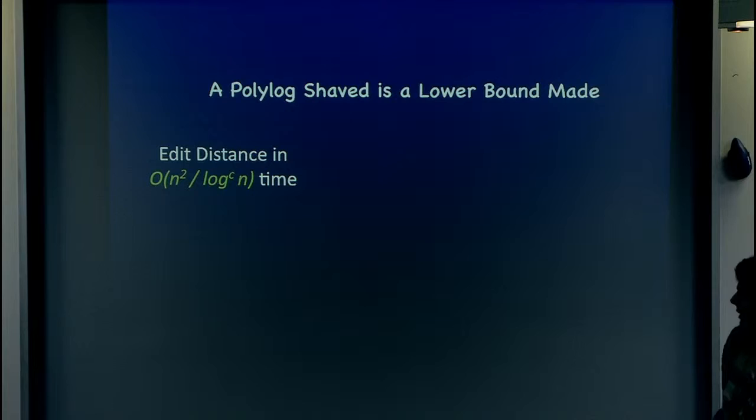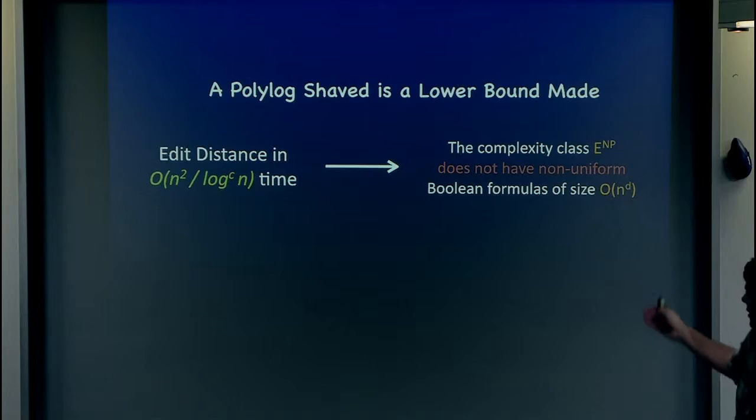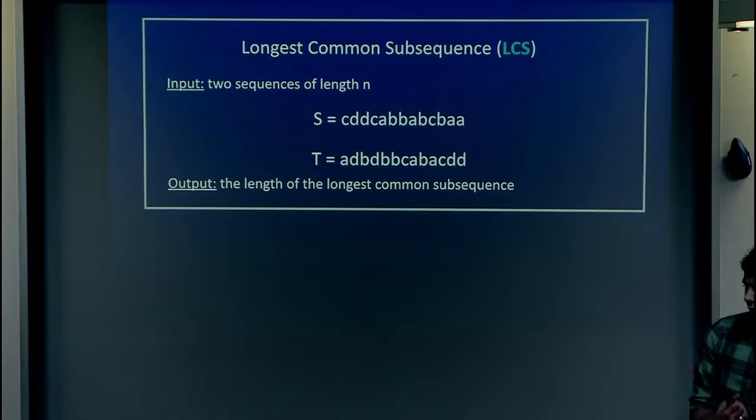One of the results I'm going to tell you about is a polylog shave lower bound. What I'm going to show is that you can take some shaving logs result — something that looks like a very algorithms result, like a SODA paper — and show that this already implies a very CCC result, a complexity result: some class does not have some kind of Boolean formulas. Before we get there, let me tell you the story.